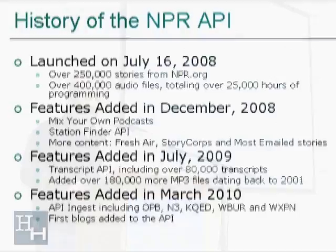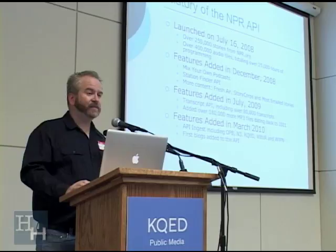In July 2009, the Transcript API was launched, which includes all transcripts from all NPR stories and over 180,000 more MP3 files. Then in 2010, NPR launched the Ingest feature, which enables content partners to send their content to NPR to be included in the NPR API's database.